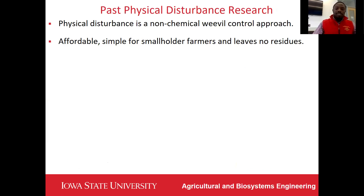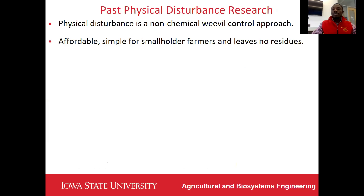Physical disturbance works by limiting contact between the maize weavers and the kernels, which makes it hard for the weavers to lay their eggs. This approach is affordable and simple for smallholder farmers because the main input is the knowledge and energy for disturbance. Also, disturbance leaves no chemical residues in the grains.